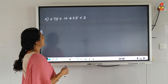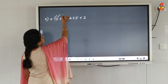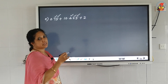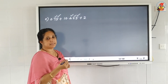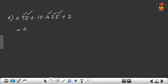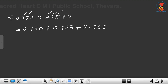Next: 0.75 plus 10.425 plus 2. Count decimal places: 0.75 has 2, 10.425 has 3, and 2 is a whole number. Maximum decimal places is 3. Write 2 as a decimal: 2.000. So we have 0.750 plus 10.425 plus 2.000.